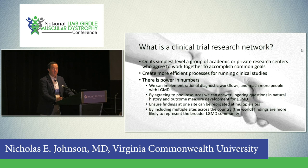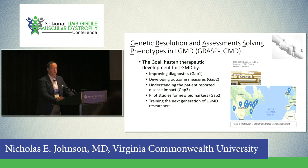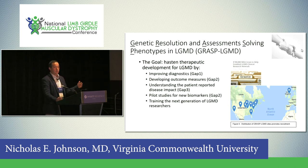We can ensure that findings at one site can be replicated at multiple sites. Because we've included multiple sites across the country and the world, findings are more likely to represent a broader LGMD community. We formed the consortium known as the Genetic Resolution and Assessment Solving Phenotypes in LGMD — GRASP. The goal is to hasten therapeutic development for limb girdle by improving diagnostics, developing outcome measures, understanding patient-reported disease impact, piloting new biomarkers, and training the next generation of limb girdle researchers.